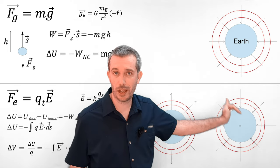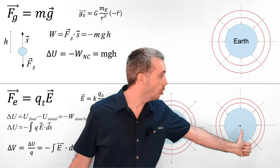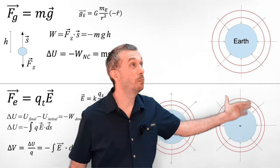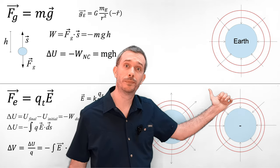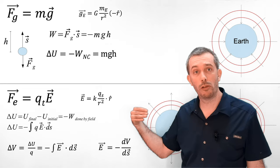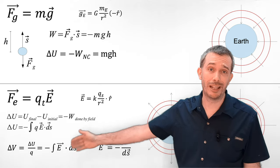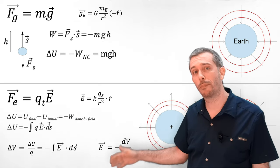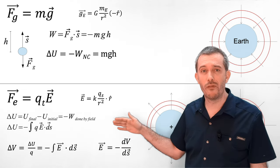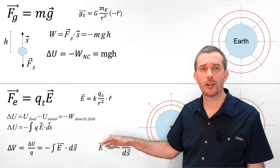So the closer we get to the negative charge, the lower the potential is. And if we go away from the negative charge, then we travel against the electric field lines and our potential goes up. We can see this effect of the electric field lines pointing towards lower potential also when we just reverse the integral that we did before. So the electric field is actually the partial derivation in space of the electric potential, which gives us a vector that always points in the direction in which the potential goes down.